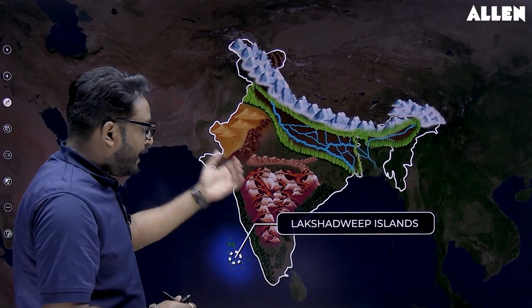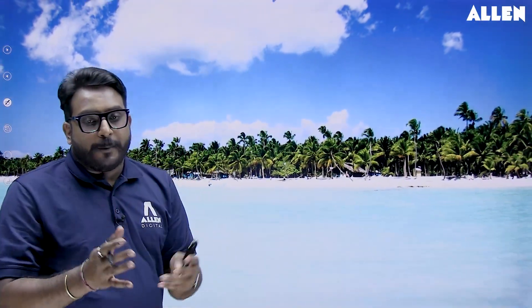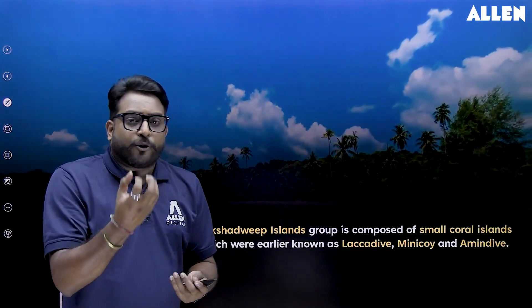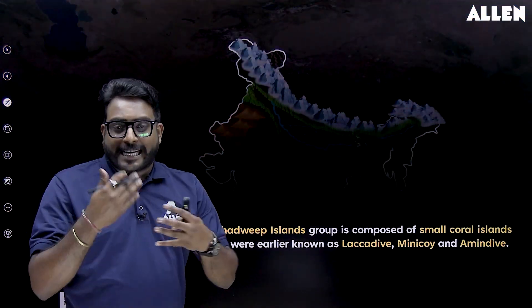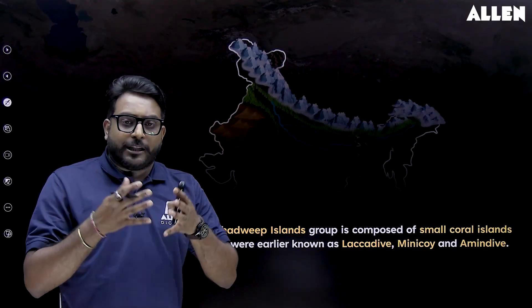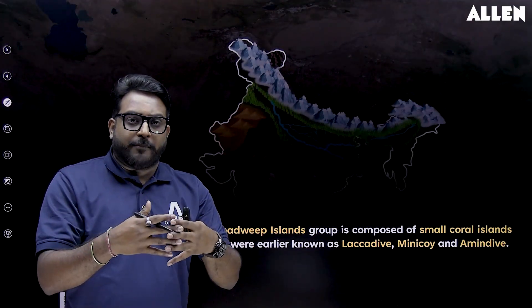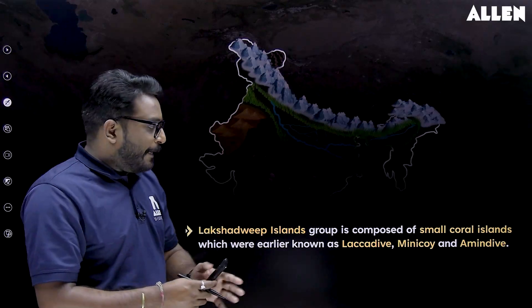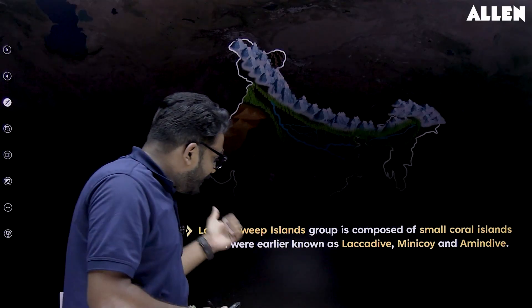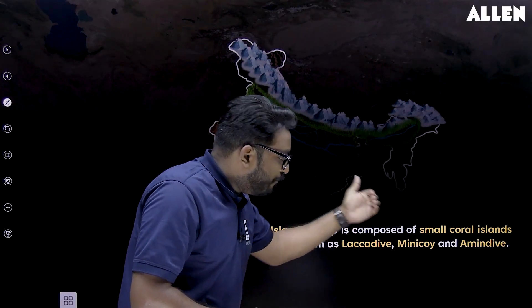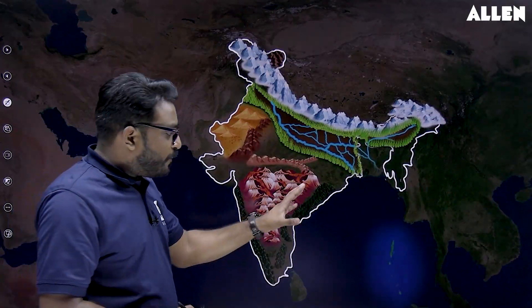In the Arabian Sea, we find the Lakshadweep Islands, which are coral islands. Corals are small microscopic organisms that secrete calcium carbonate and live in colonies, millions in number. Earlier, this island group was known as the Laccadive, Minicoy, and Amindivi Islands.